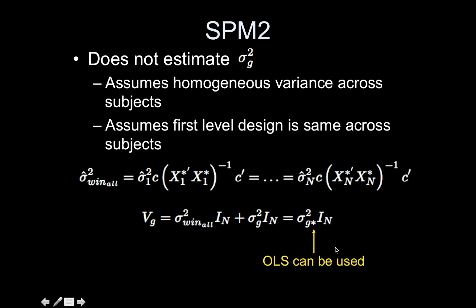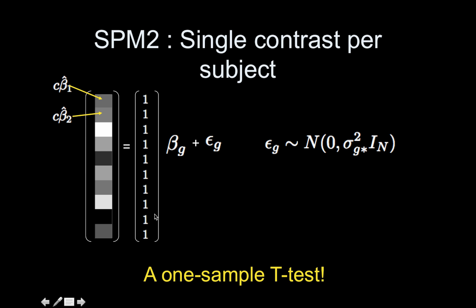The group covariance matrix Vg is instead just sigma squared within all times the identity plus sigma squared g times the identity. These are both unknown effectively, so it's just a single variance term times the identity. We assume this diagonal—everything's the same. If these are all the same, then we're just adding a diagonal matrix to a diagonal matrix, and we can just basically assume it's equal to some diagonal matrix. What's awesome is then you can just use OLS. Basically this group model is a one-sample t-test, which is really kind of cool.